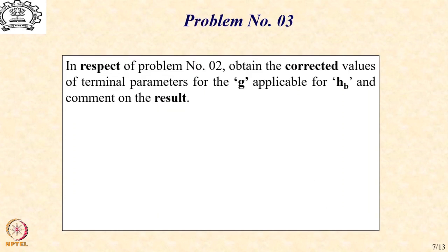Let us extend this to problem number 3, where we try to correct the G value applicable for that altitude. Please note the altitude is almost 180 kilometers, which is very large. Obviously, the sea level gravity value is no longer applicable, and we must correct the gravitational value and recalculate the burnout parameters, to see what difference this correction makes.